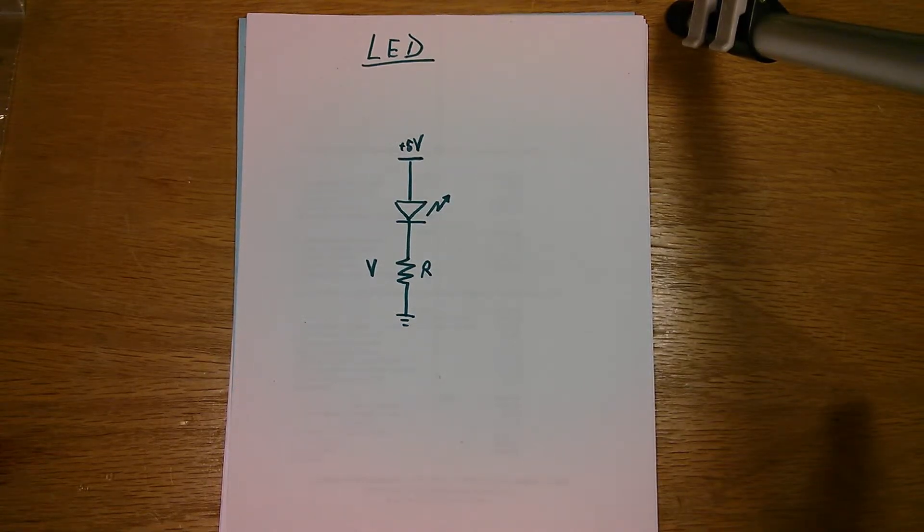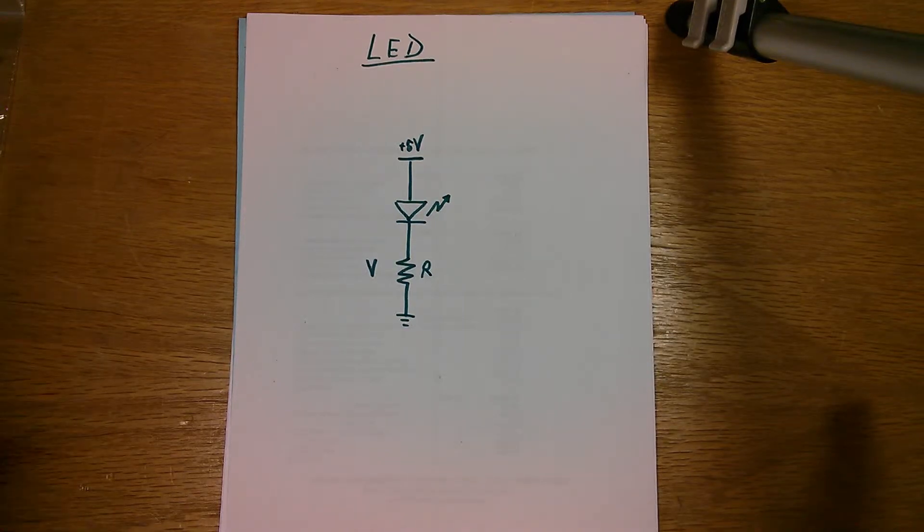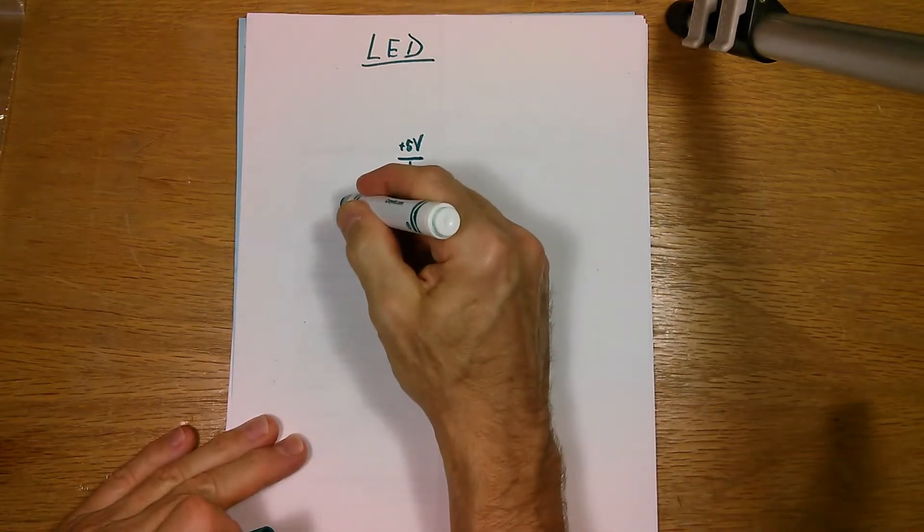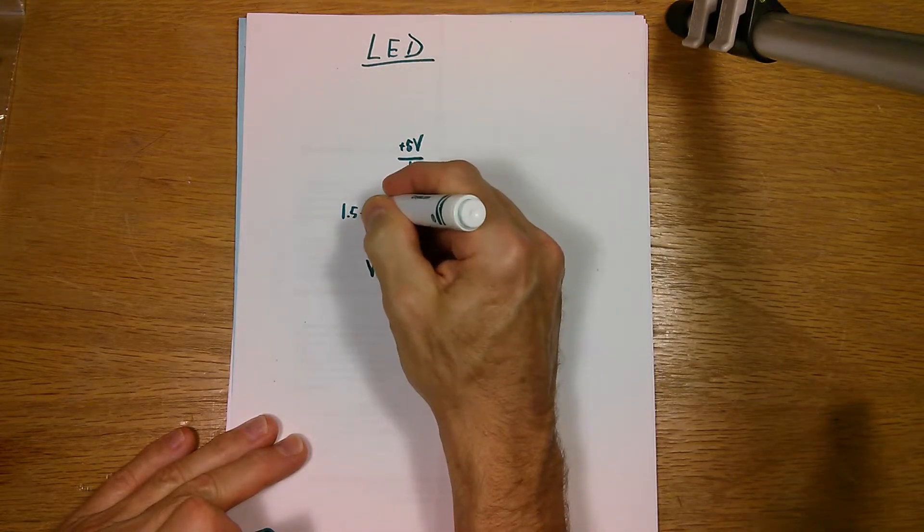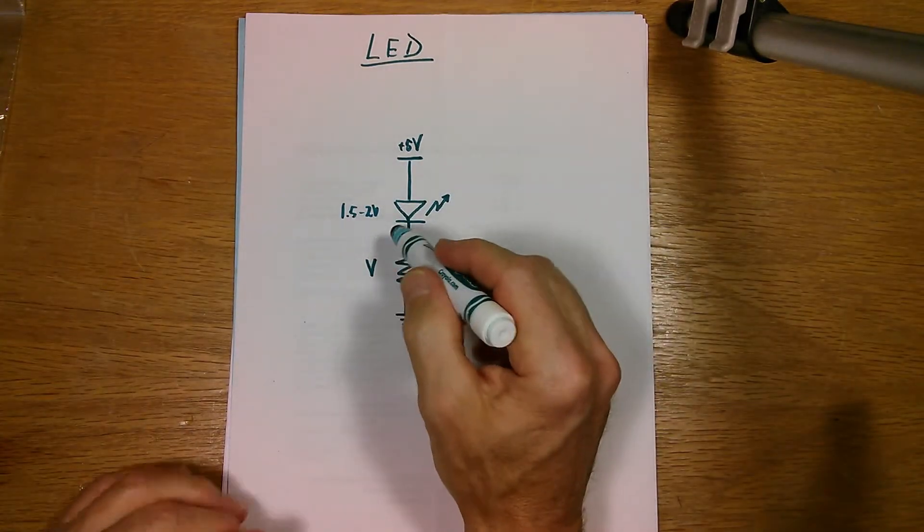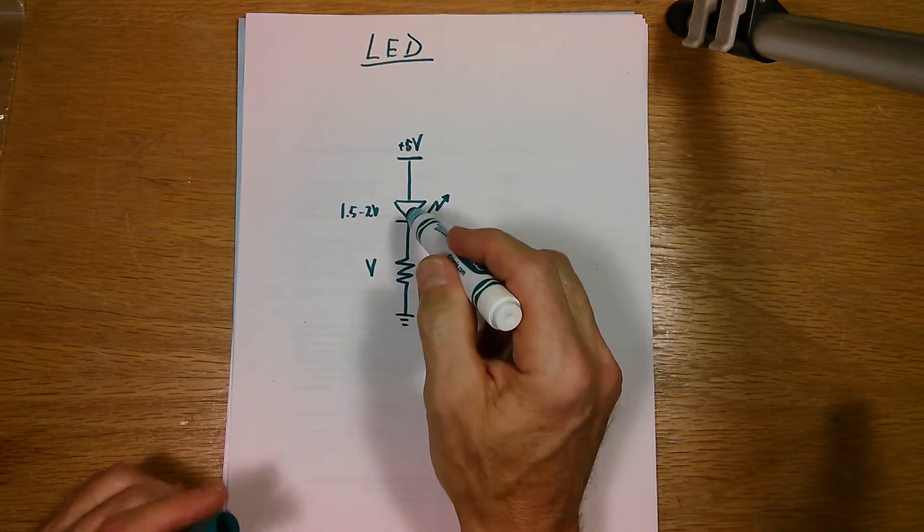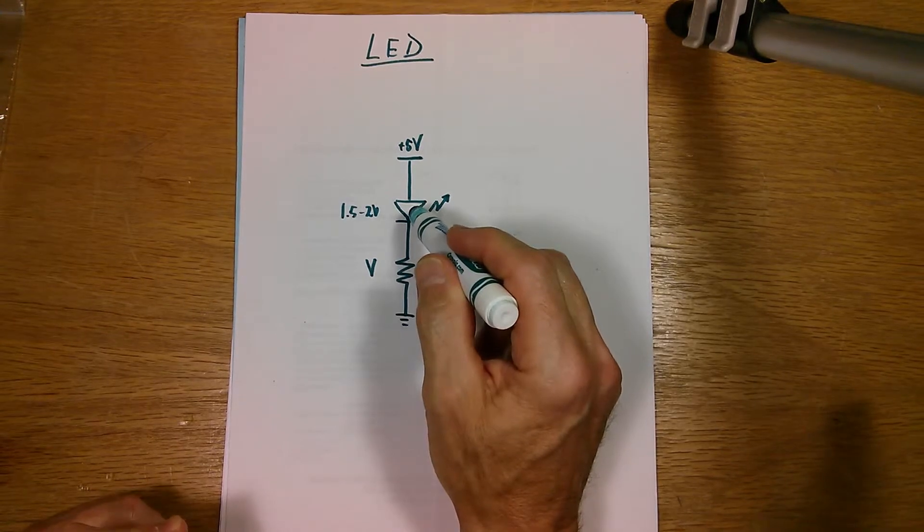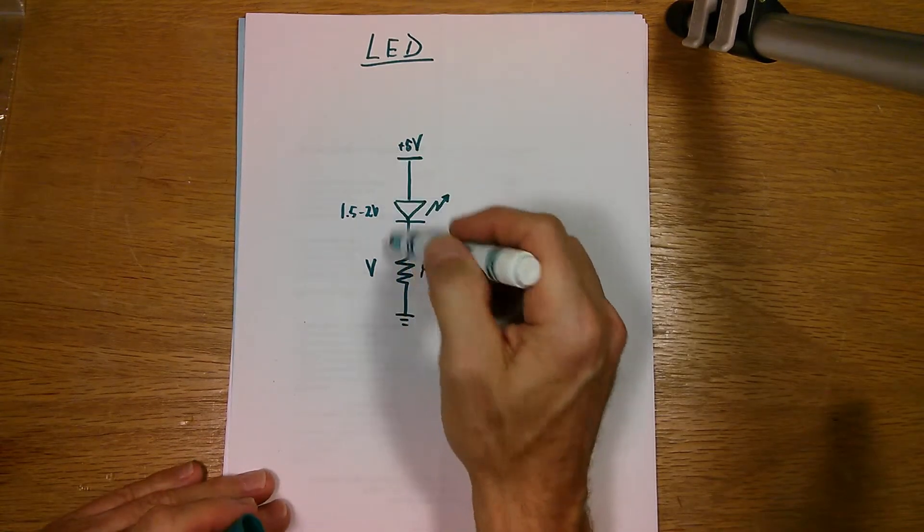When they're running in their normal operations with the right amount of current flowing through them, there's approximately one and a half to two volts across the diode.